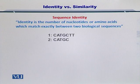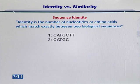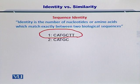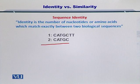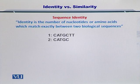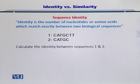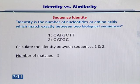Let's take a look at an example. Here you have two nucleotide sequences: C-A-T-G-C-T-T, which I have numbered as sequence one, and C-A-T-G-C, which is sequence two. I would like to compare these two sequences and evaluate their similarity. The first thing I need to do is count how many matches exist between these two sequences.